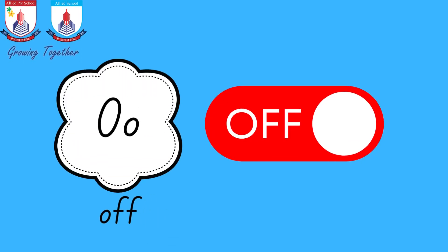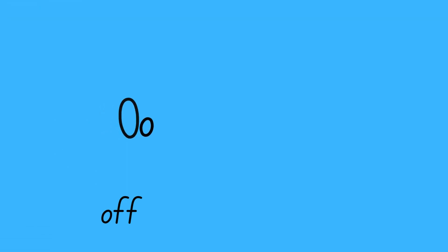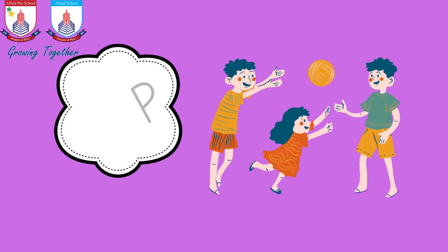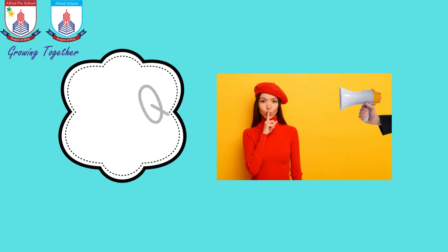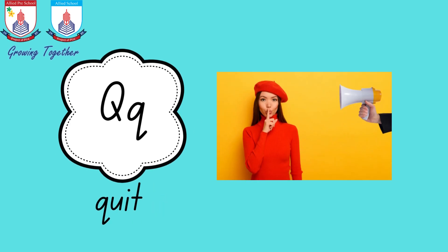O is for a-a-off, a-a-off. P is for p-p-play, p-p-play. Q is for qu-qu-quiet, qu-qu-quiet.